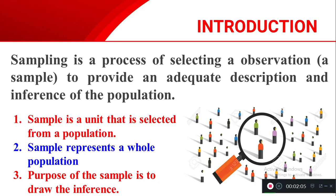From the sample, whatever values the sample gets, we can compare that. The sample value is like that, and similarly the population will also have the same type of characteristics and the same type of values — we can generalize.